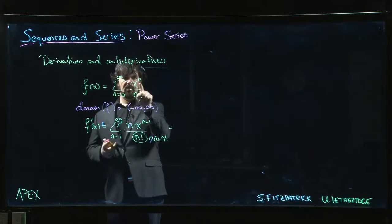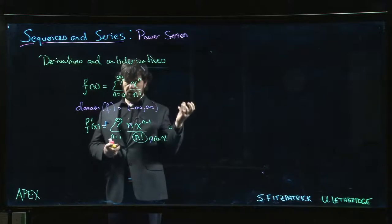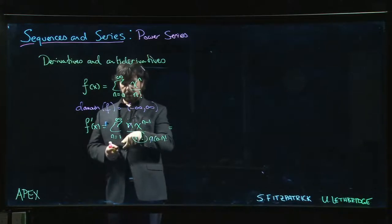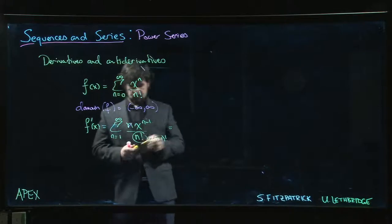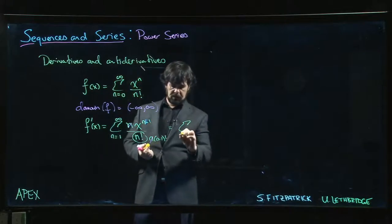Because the first term here is just 1. When n equals 0, we get 1 over 0 factorial, we just get 1. That derivative goes away, so this sum is starting at 1.